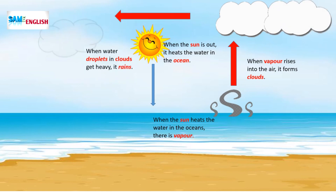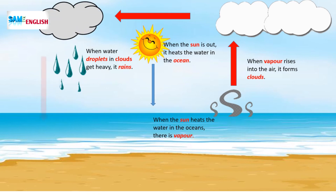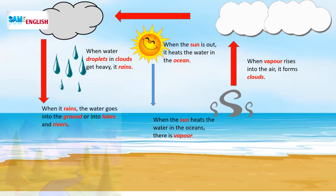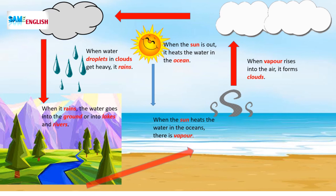When water droplets in clouds get heavy, it rains. When it rains, the water goes into the ground or into lakes and rivers.